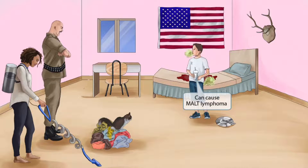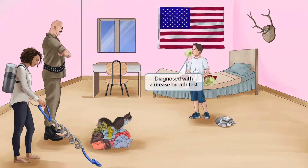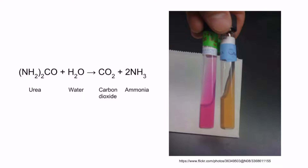MALT stands for mucosa-associated lymphoid tissue, and this type of lymphoma is a cancer that originates from B cells and affects the gastric tissue. Notice that the kid is burping — this gross green burp cloud is here to help you remember the word breath, and that H. pylori can be diagnosed with a urease breath test. H. pylori converts urea into carbon dioxide and ammonia via the urease enzyme, so the urease breath test gives the patient a carbon isotope of urea by mouth. If H. pylori is present in the stomach, the organism will produce labeled CO2, which can then be detected in a breath sample.